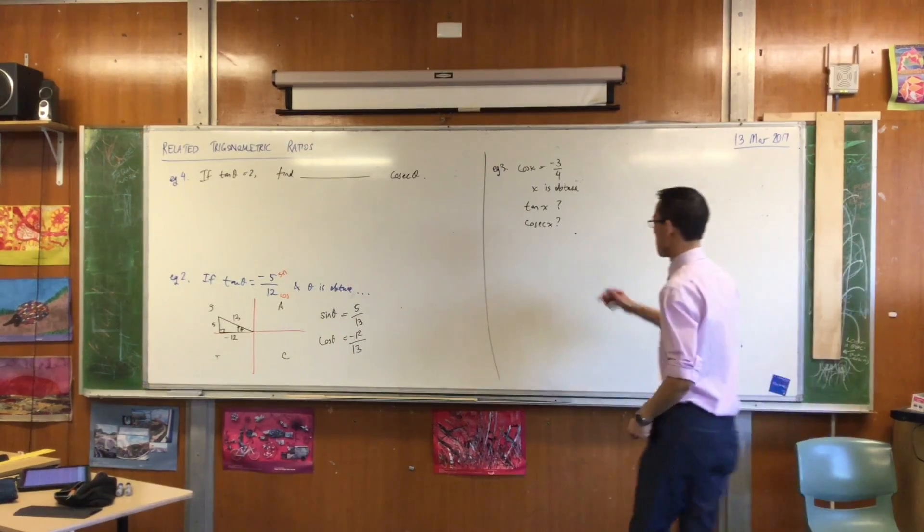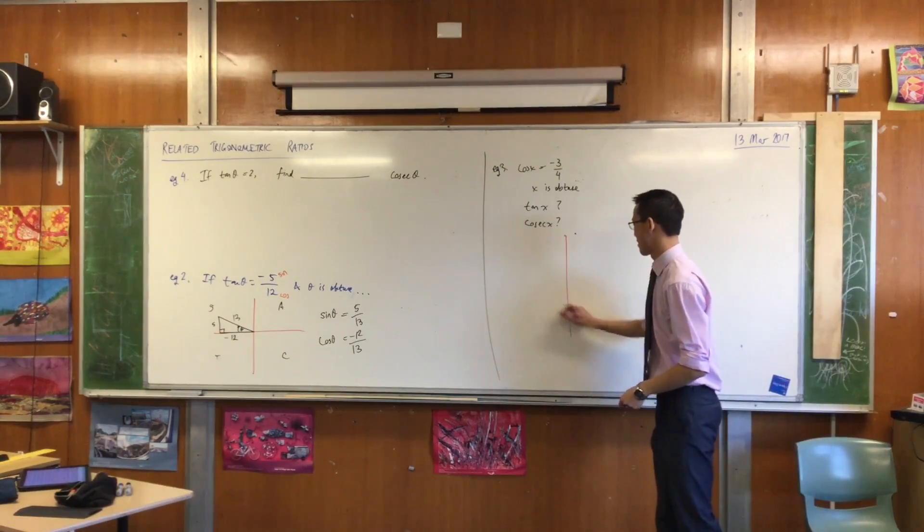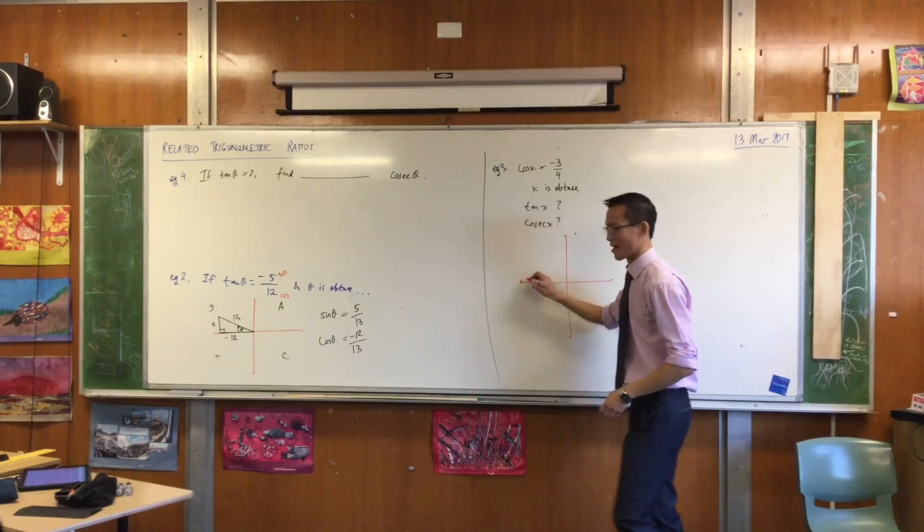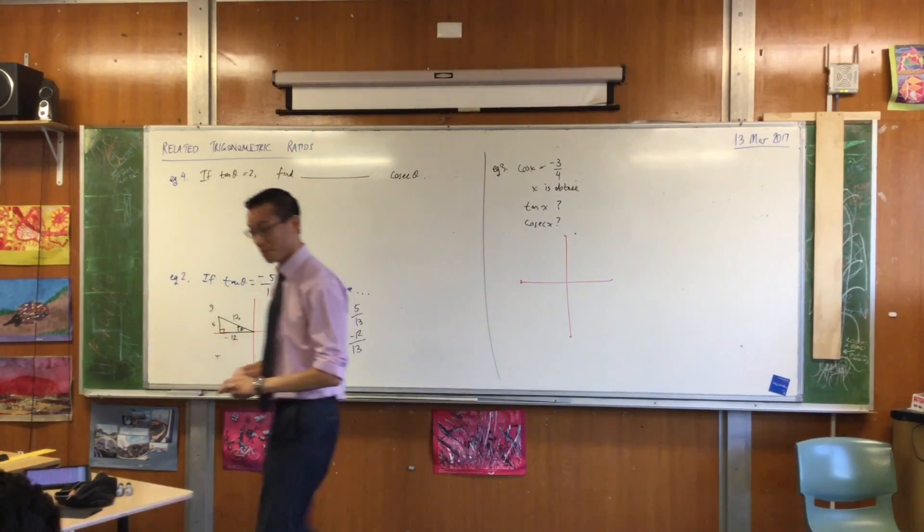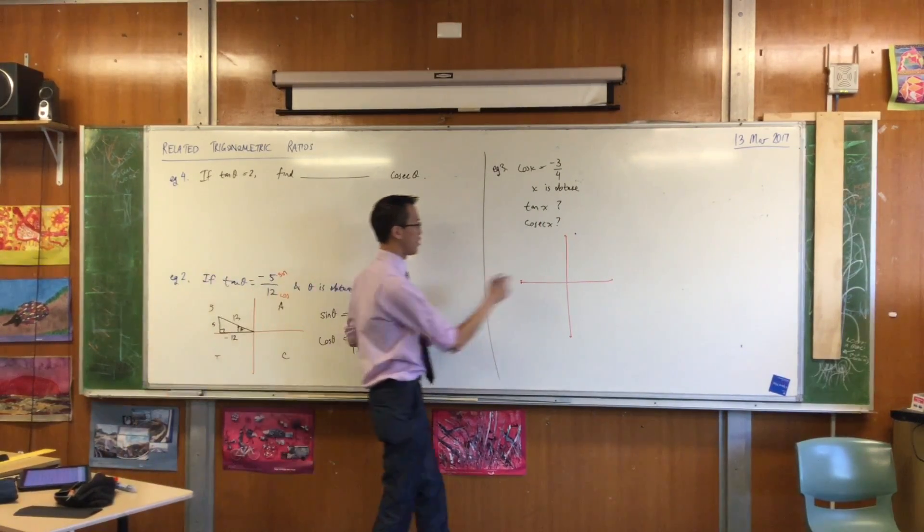I'm going to start by drawing my quadrants. Which quadrant am I in? Second quadrant, again. So I'm going to draw my triangle off here.